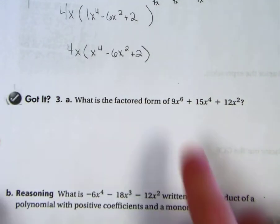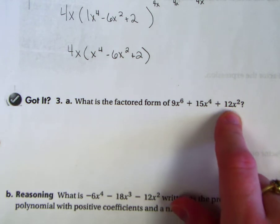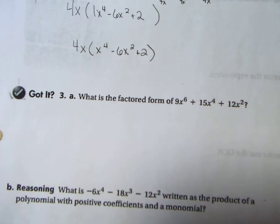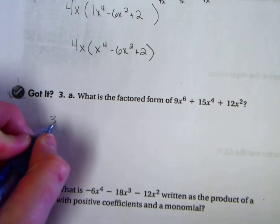What is the factored form of this polynomial? Look at all of your numbers. Well, I know 3 goes into all of these numbers, and that's the only number that goes into everything, and it's the largest. So I'm going to pull out a 3.